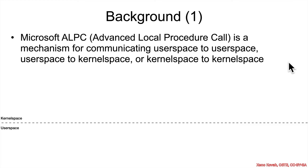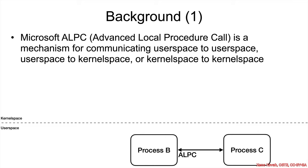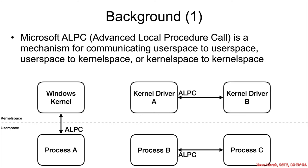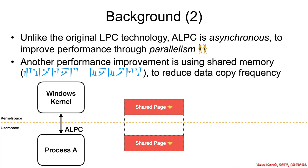ALPC is a mechanism for communicating from user space to user space, user space to kernel space, or kernel space to kernel space. When you have this sort of communication, a programmer should think of it as having attack surface lines between the two sides, so whichever side is receiving the ALPC message should treat the other side as untrusted.